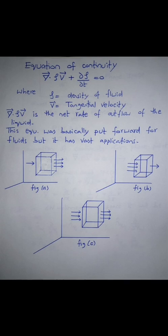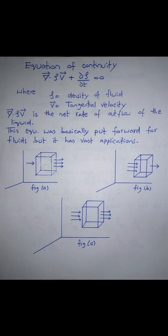Now we are going to state Liouville's theorem in statistical mechanics: the density of states in an ensemble of many identical systems — identical in their macro states but with different initial conditions — is constant along every trajectory in phase space. This theorem is related to the equation of continuity: ∇·(ρv) + ∂ρ/∂t = 0.